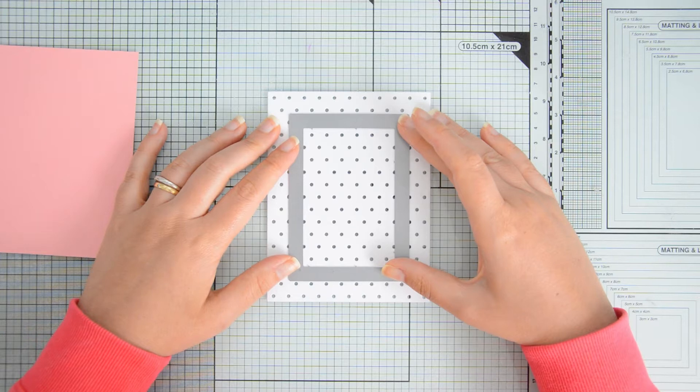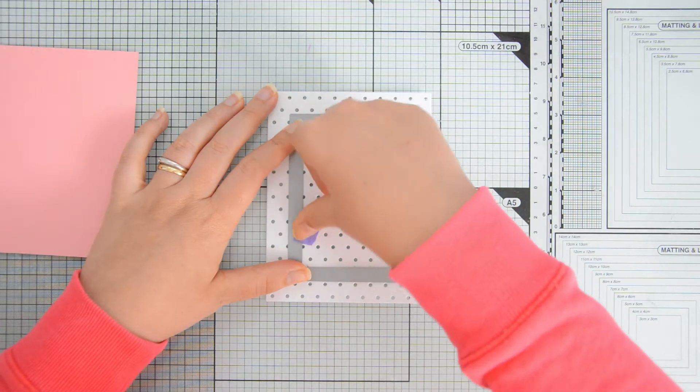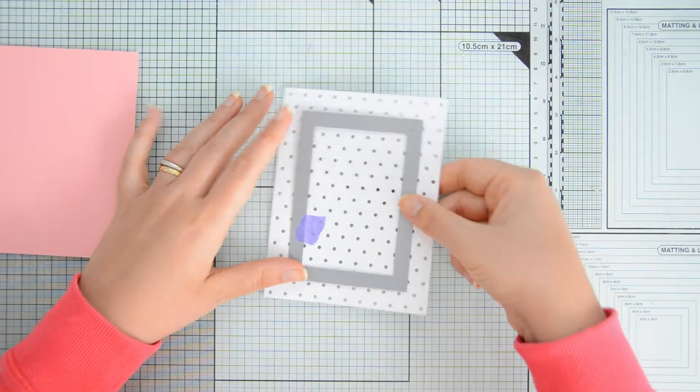I then used one of the dies in the dotted patterns set 2 to cut a window out of the center of this polka dot panel.